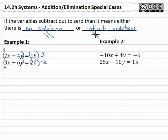When we do that we get for the first equation, 6x minus 3 times 4 is 12y equals 3 times 16.